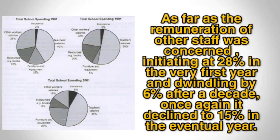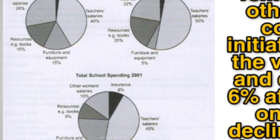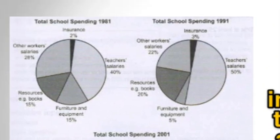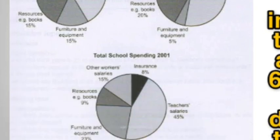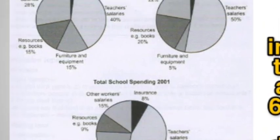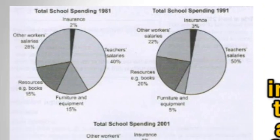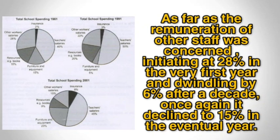As far as the remuneration — that means the salary — of other staff was concerned: other staff figures are 28% in 1981, 22% in 1991, and 15% in 2001. When you have three data points, you can use the ING form, as I mentioned in the previous video. 'Initiating at' means starting at — so 28% in the very first year, and dwindling by...